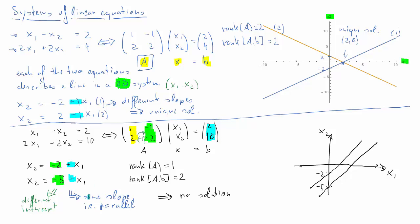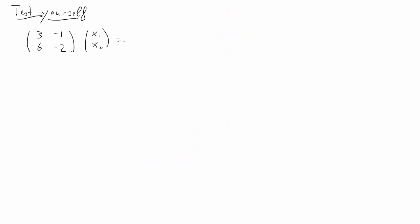It is the fact that both slopes are equal that is represented by this reduced rank — we have two equations, but the rank of A is only 1. That gives rise to the situation of two parallel lines.